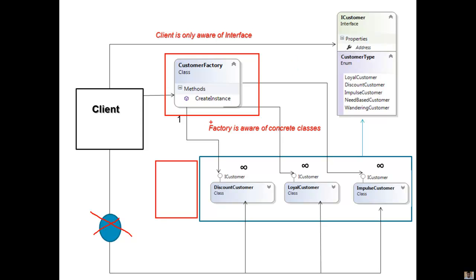The dependency of the client to know each of the customer classes is also removed. These are the two things that will be achieved by implementing a simple factory pattern. Now let me show you the code.